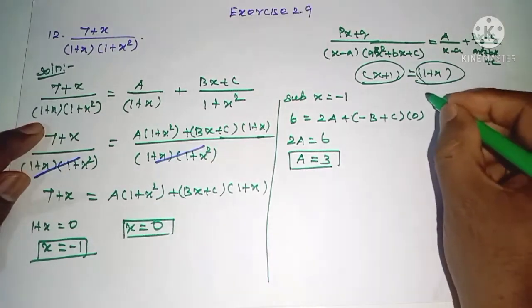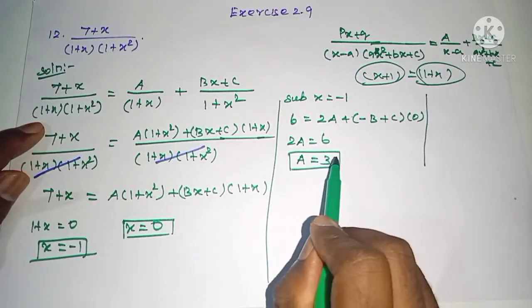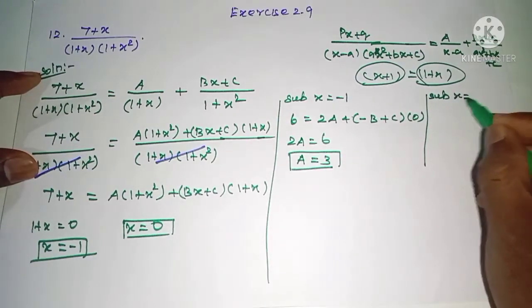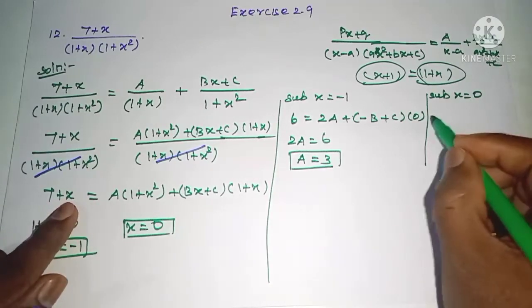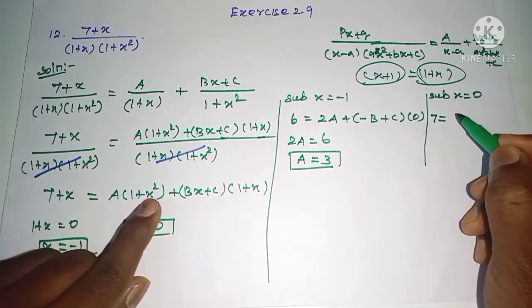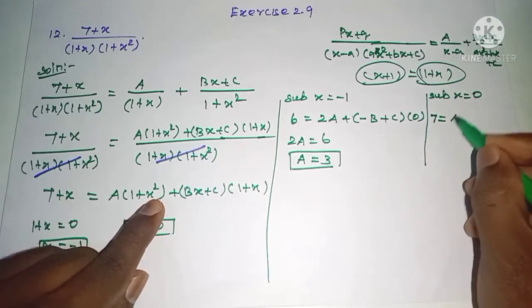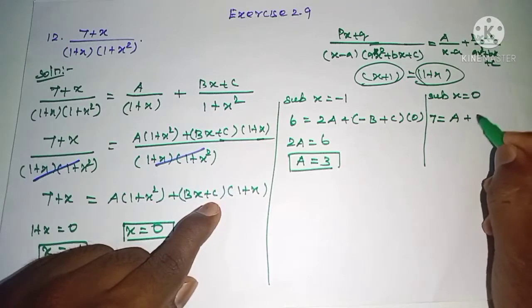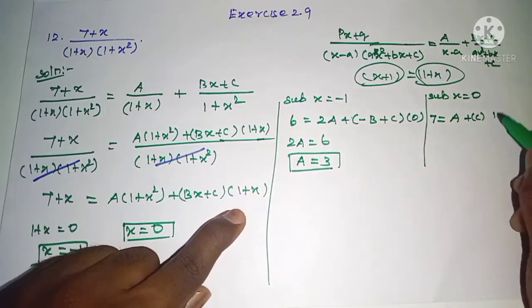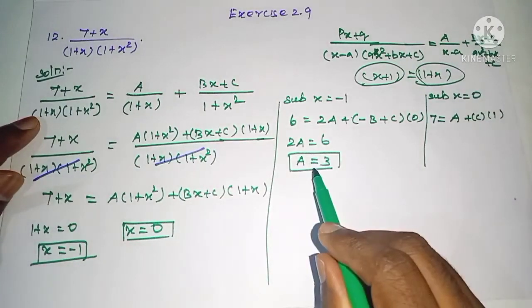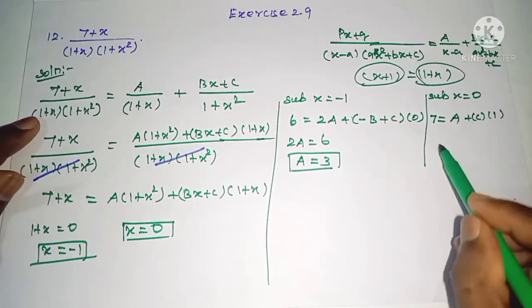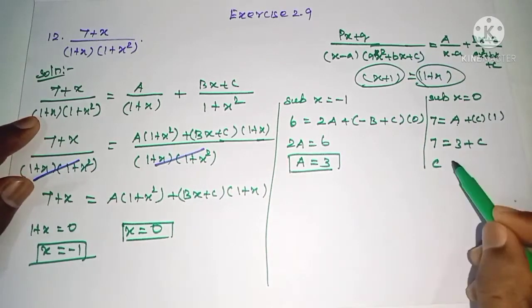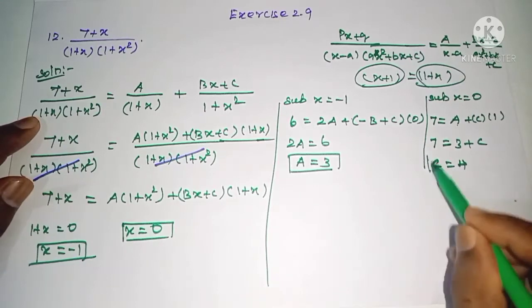We have found A = 3. Next, substituting x = 0: the left side gives 7 + 0 = 7. On the right side, A(1 + 0) = A = 3, and (B·0 + C)(1 + 0) = C. So 7 = 3 + C, which gives C = 7 − 3 = 4.